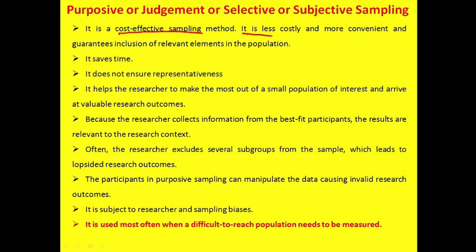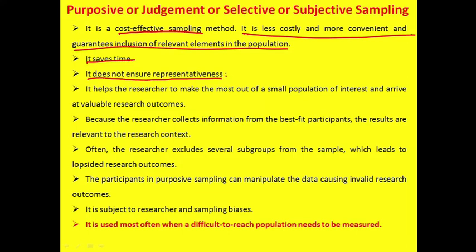Purposive sampling is less costly and more convenient, and guarantees inclusion of relevant elements. The researcher selects whichever participants they want information from. It saves time but does not ensure representativeness, since not all elements get an equal chance of being selected. It helps the researcher make the most of a small population of interest and arrive at valuable research outcomes.